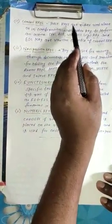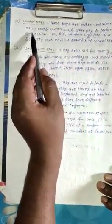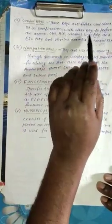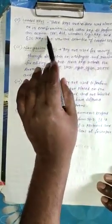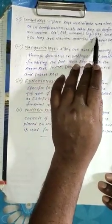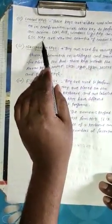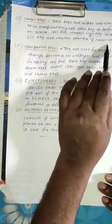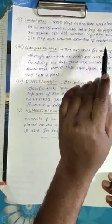Dear students, our second type of keys - control keys. These keys are either used alone or in combination with other keys to perform an action. Control, alt, Windows logo key, and escape key are various examples of control keys.